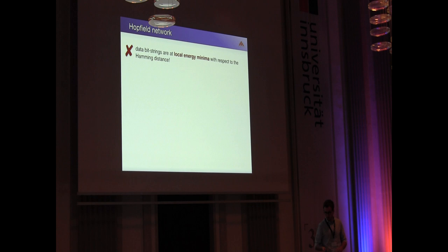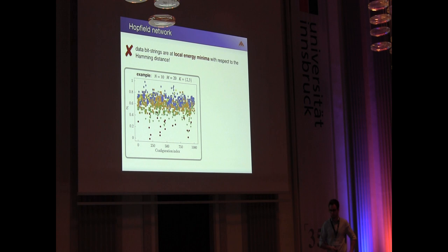The Hopfield network construction only ensures that data bit strings are located at local energy minima with respect to the Hamming distance. Here I plotted an example for again 10 spins, 20 arbitrary patterns and 2 and 3-body interaction. The color code here is the minimal Hamming distance to any of the stored patterns. So 0 means the pattern itself, 1 means Hamming distance 1 and so on. This is what in neural network community is called the basin of attraction. As you can see, this Hopfield construction poses a very nice Hamming distance dependent ordering onto the spectrum, which is the basin of attraction. But what we want in the end is global energy minima.